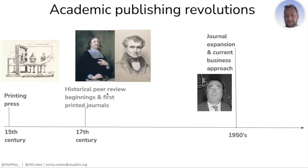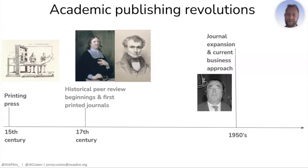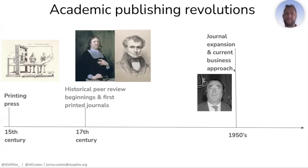There was a big gulf from the 17th century until the 1950s, where lots of things were happening, but when it comes to revolutions, it doesn't feel like much was going on for academia. Then we hit the 1950s, with an expansion of journals that is still continuing today and the development of the current business approach to academic publishing, spearheaded by Robert Maxwell.